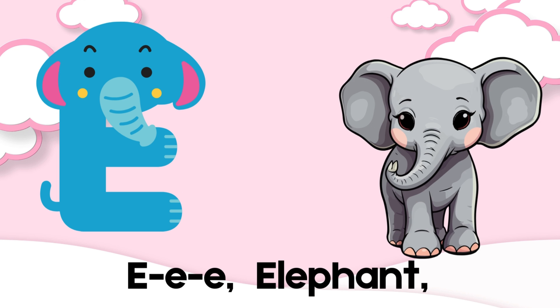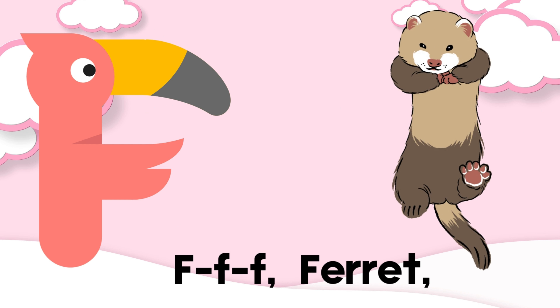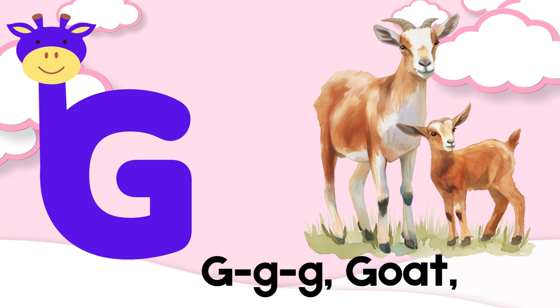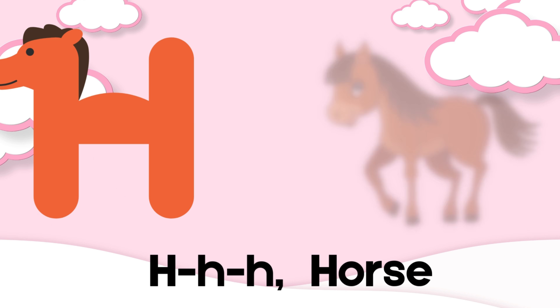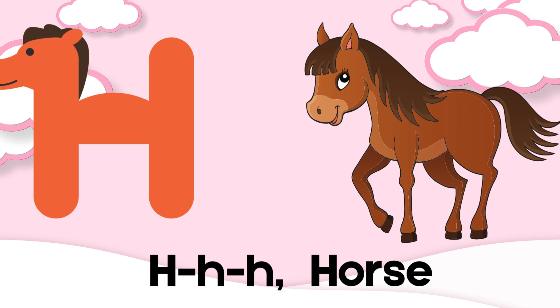E is for elephant, f-f-f-f. F is for ferret, g-g-g-g. G is for goat, ha-ha-ha-ha. H is for horse.